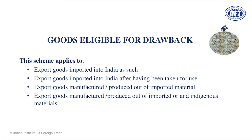You can also procure certain components from outside and certain components from India and claim refund of that — no problem. So these are the four cases: two cases under Section 74 where goods are imported and re-exported without use or with use; and two cases under Section 75 where goods are imported, manufactured, and re-exported out of India, or goods are partly imported and partly locally sourced for which a drawback claim is required.